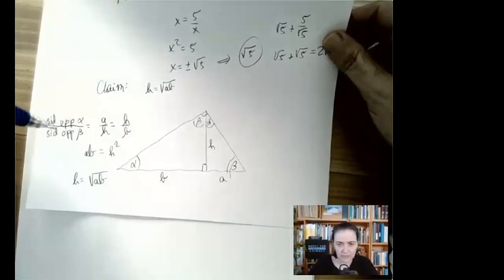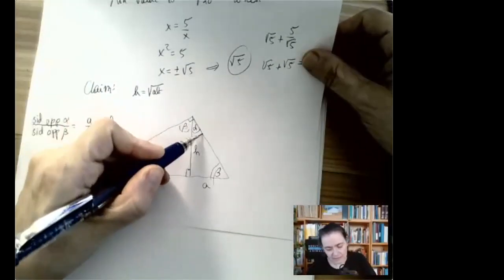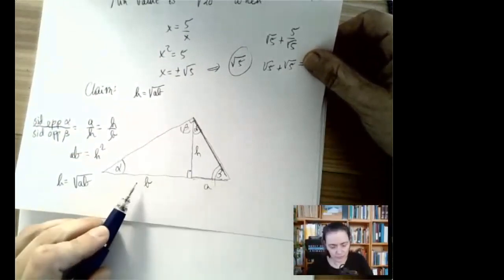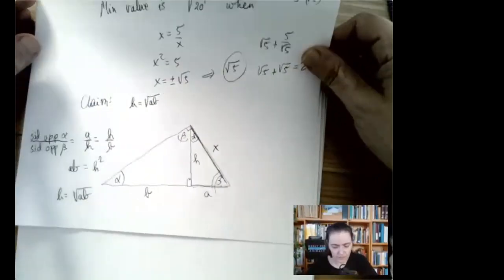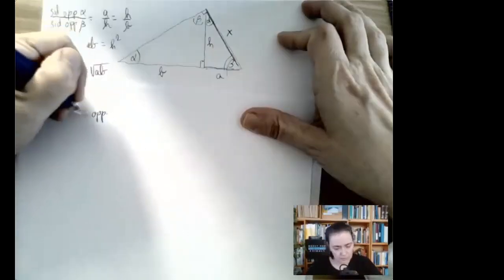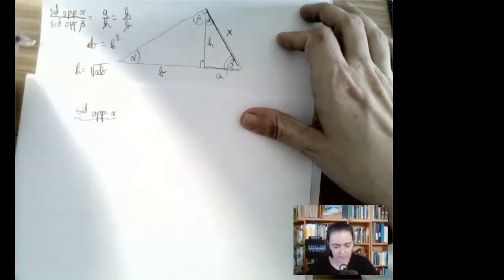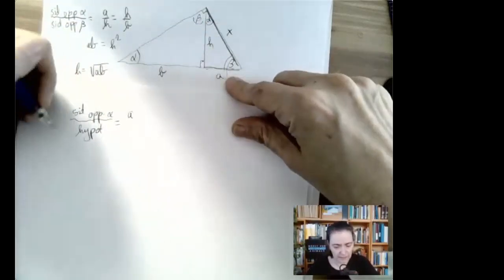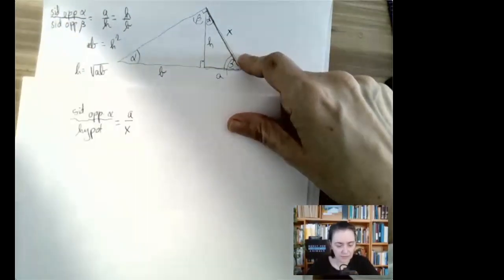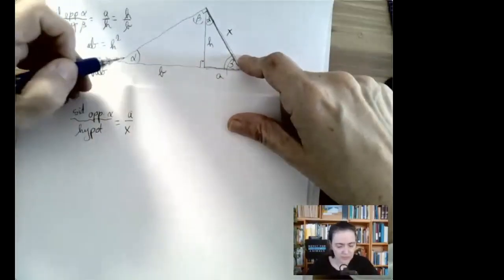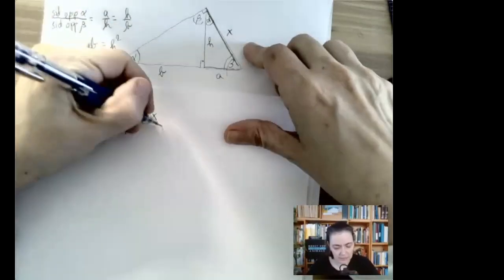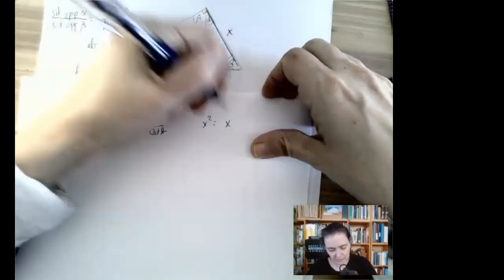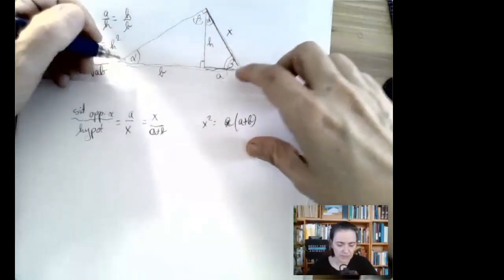Using similar triangles: in the small triangle, the side opposite alpha is a and the hypotenuse is h; in the larger triangle, the side opposite alpha is h and the hypotenuse is b. This gives a/h = h/b, so cross-multiplying: h² = ab. There it is — h is the geometric mean of a and b. There are two other geometric means in this triangle: for instance, the leg x is the geometric mean of segment a and the whole hypotenuse (a + b), since a/x = x/(a+b), giving x² = a(a+b).